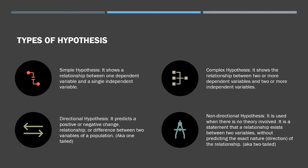The next type is the directional hypothesis. It predicts a positive or negative change, relationship, or difference between two variables of a population. A directional hypothesis goes in one direction — it tells us whether there is a positive or negative relationship between the variables. This is also known as a one-tailed hypothesis.